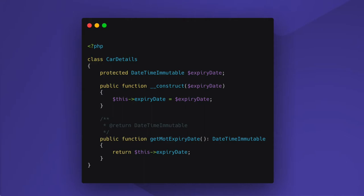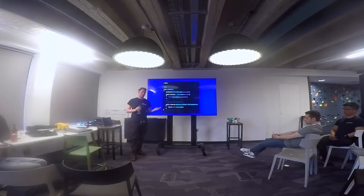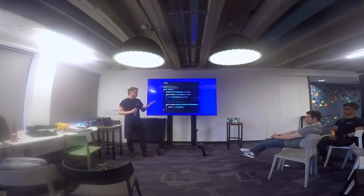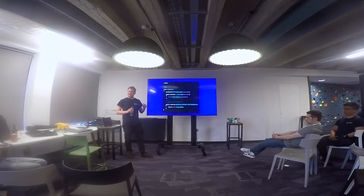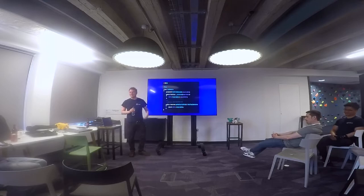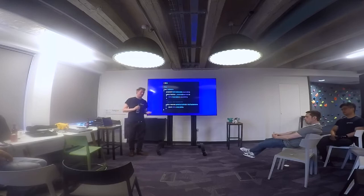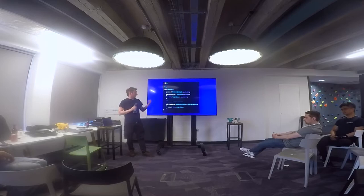From this I was thinking about when you can use immutability — when you don't want to change state. DateTimeImmutable is a great class in PHP's standard library. If you aren't going to mutate a date, use DateTimeImmutable — if anything tries to change it, it's simply impossible. A good example is an MOT date for a car: that's not going to change, and if it is being changed you know that's a bug.